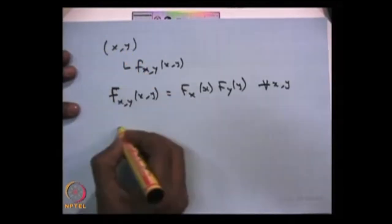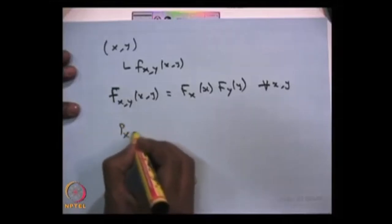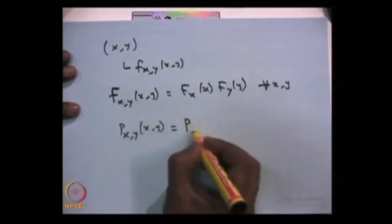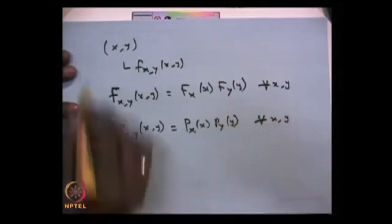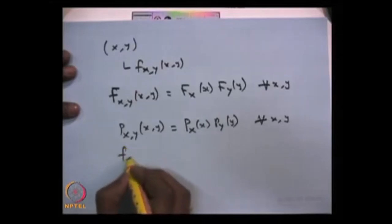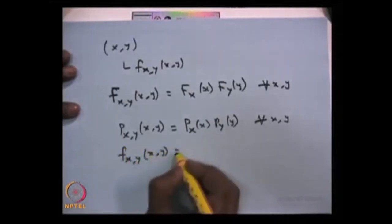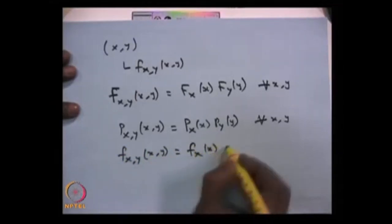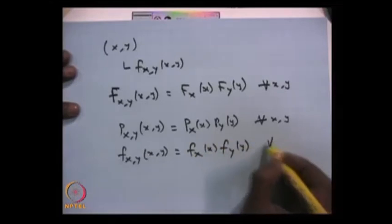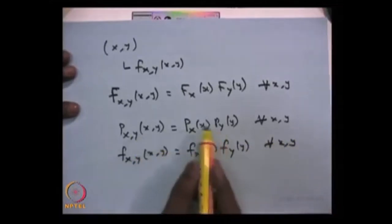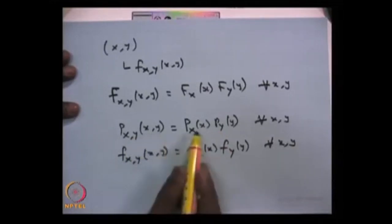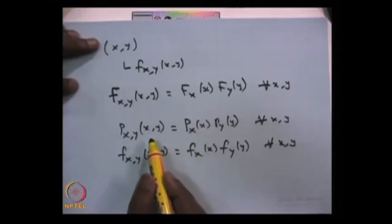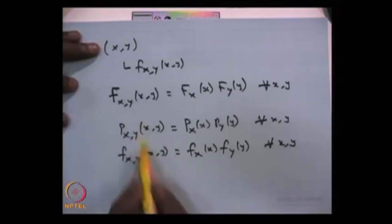If both random variables are discrete, then you can express the joint probability mass function as the product of individual probability mass functions for all x, y. If both random variables are continuous, then the joint probability density function will be the product of individual probability density functions. Based on whether the random variables are discrete or continuous, you can cross-check whether this property is satisfied, and if so, you can conclude the random variables are independent. Similarly, if the random variables are independent, this property is going to be satisfied.